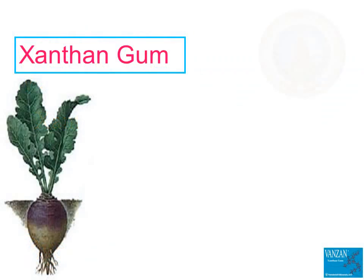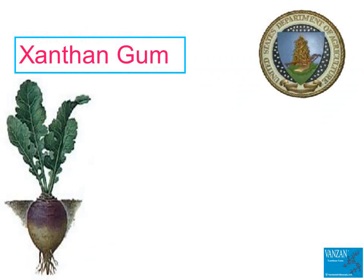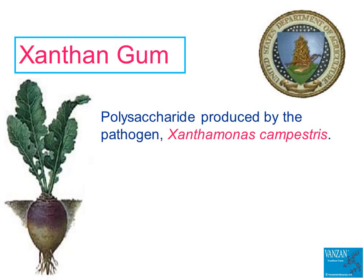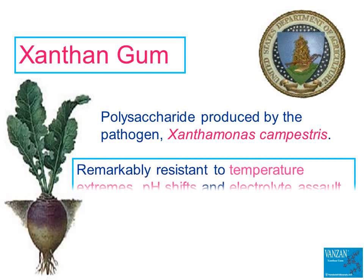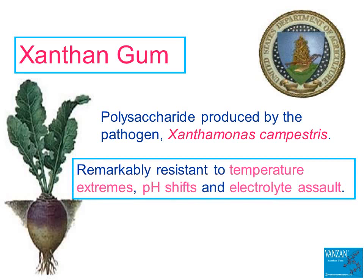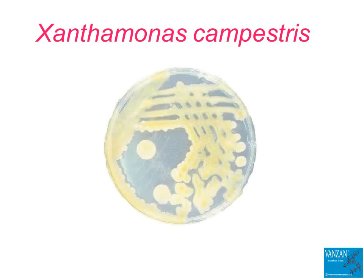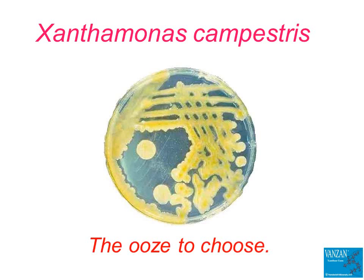In the late 1950s, USDA scientists became interested in the polysaccharide produced by the pathogen Xanthomonas campestris. This bacteria showed a fondness for rutabaga leaves, and its protective ooze was found to be remarkably resistant to temperature extremes, pH shifts, and electrolyte assault. By 1959, rotted rutabaga slime was successfully isolated as polysaccharide B1459, which has since become better known as xanthan gum.